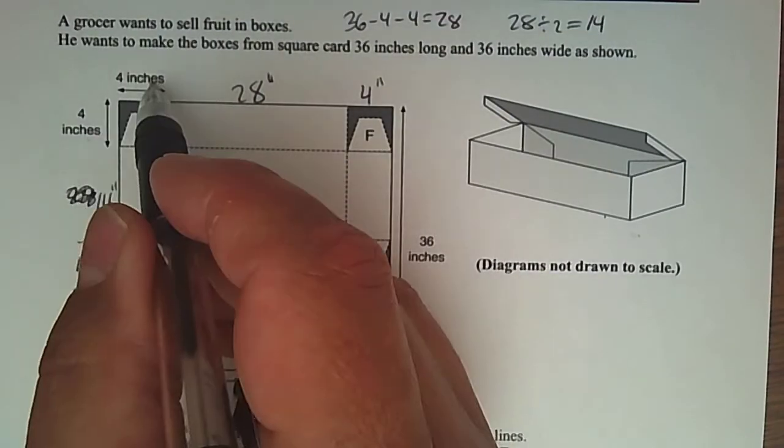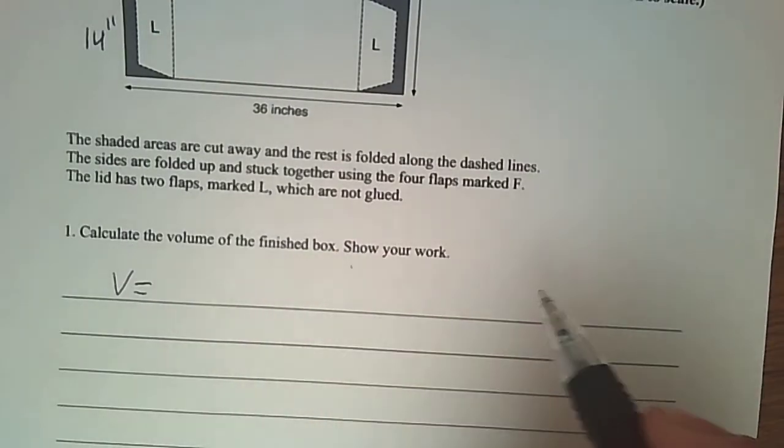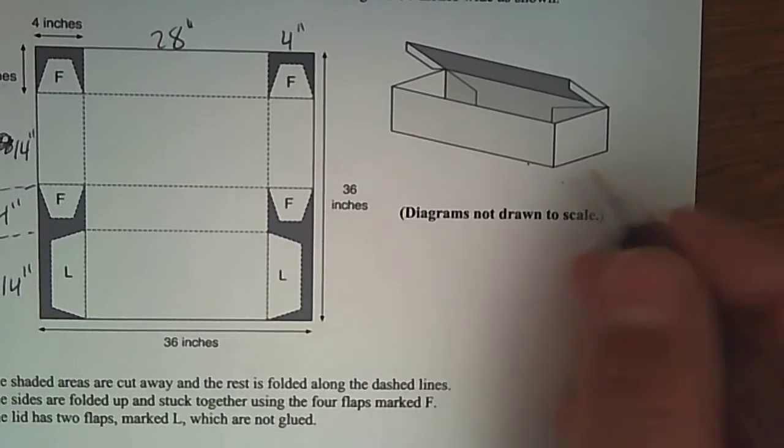It gives some dimensions in terms of the corner, which is four inches by four inches, which helps with the flaps to understand the volume. Calculate the volume of a finished box. Show your work, how you calculate this volume.